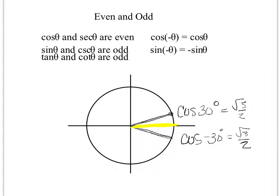So even though we changed it to be a negative angle, the answer is exactly the same. Now for the odd ones, what happens is, if I'm looking at the sine of 30 degrees, that is the y value, which is a positive 1 half.